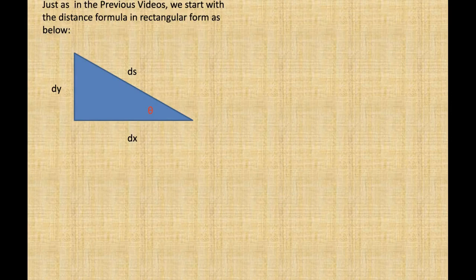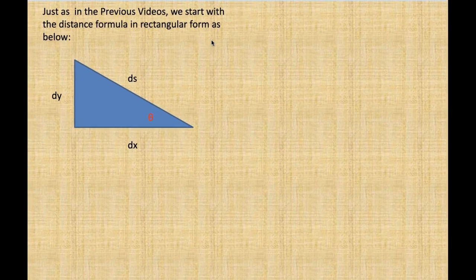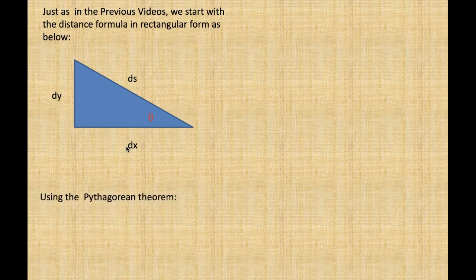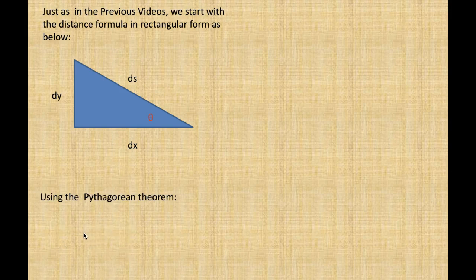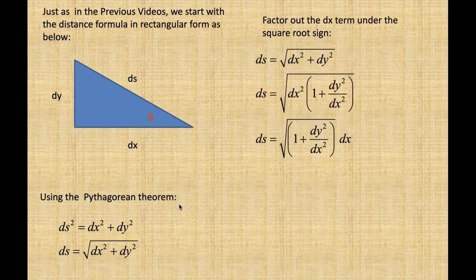Just as in previous videos, we start with the distance formula in rectangular form: dx, dy, ds. So ds squared, by the Pythagorean theorem, equals dx squared plus dy squared. Take the square root of both sides, and we factor out the dx squared term under the square root sign, leaving dx squared times the quantity one plus dy over dx squared.